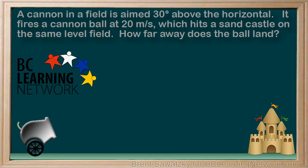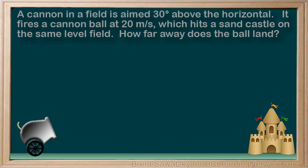A projectile example. A cannon in a field is aimed 30 degrees above the horizontal. It fires a cannonball at 20 meters per second and hits a sand castle on the same level field. How far away does the ball land?